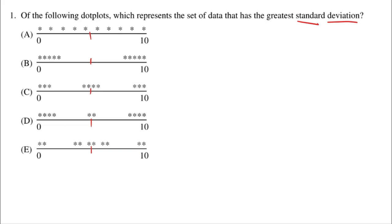I'm going to go with B. B is going to have the greatest standard deviation because the distance typically for each point from the mean is the greatest. Most points are way to the left or way to the right, meaning they'll have a really big standard deviation. All the other choices have some points near the mean, which lowers the standard deviation slightly compared to B, which has pretty much all of the points far from the mean.